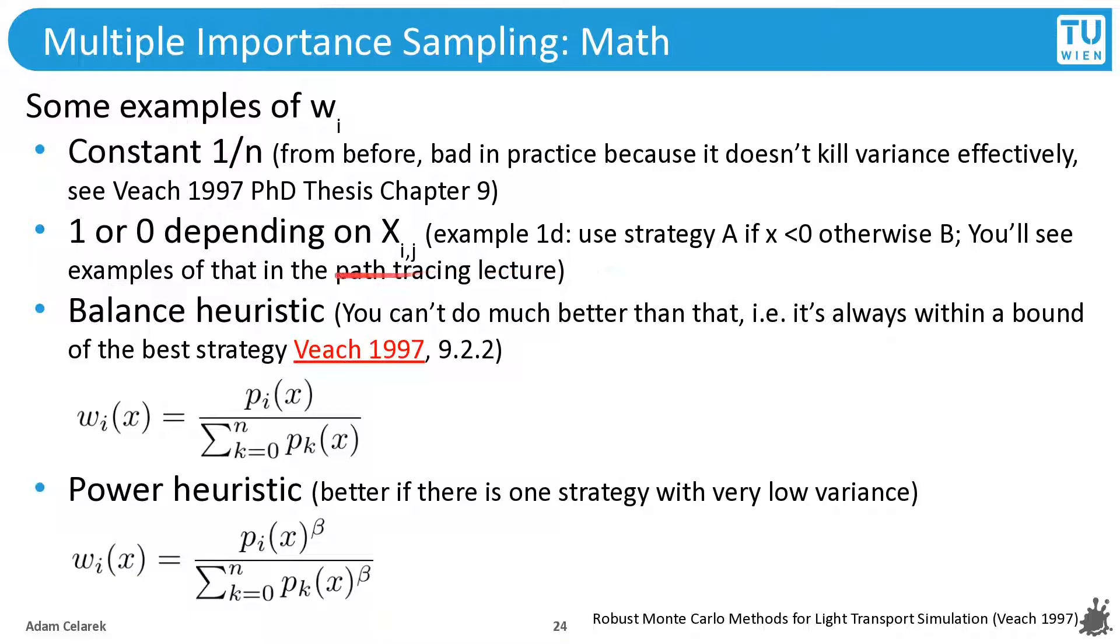This is also used in rendering, and we will see later some examples in the path tracing lecture. But in the 1D case, just imagine that you are using one sampling strategy if x is smaller than 0, and another sampling strategy if x is greater or equal to 0. So depending on where we are in the domain, we have different sampling strategies.